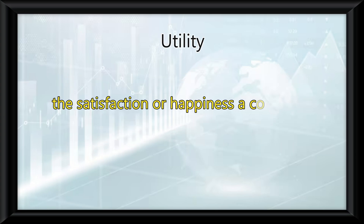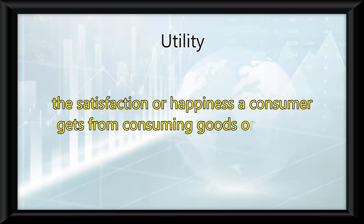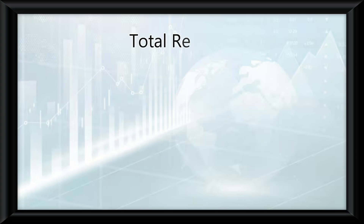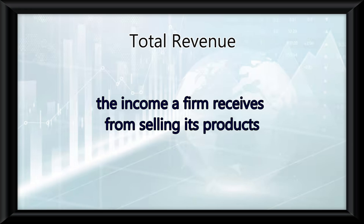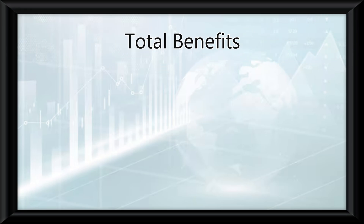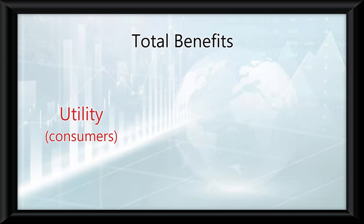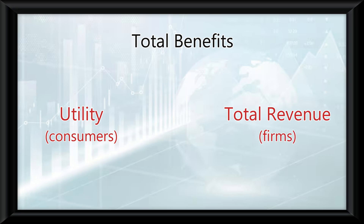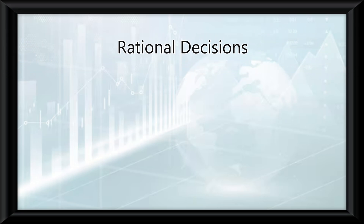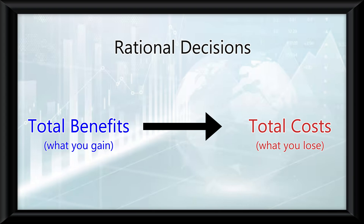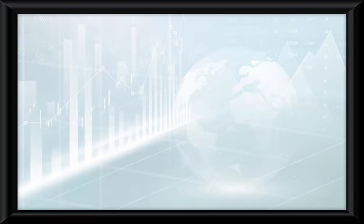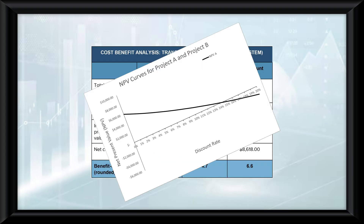Utility is the satisfaction or happiness a consumer gets from consuming goods or services. Total revenue refers to the income a firm receives from selling its product. Total benefits are measured as utility for consumers and total revenue for firms. Rational decisions are made by comparing total benefits — what you gain — to total costs — what you lose.